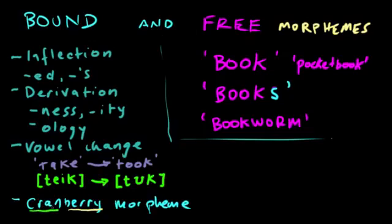But this morpheme cran is a bound morpheme that only ever exists in this context, in this very specific context, in front of the word berry. There's no other time in the entirety of the English language that cran comes up. It's just in the context of cranberry. Same with boysenberry. Boysen only exists right in front of berry. It's a bound morpheme with only one instance. And I think that's pretty cool.